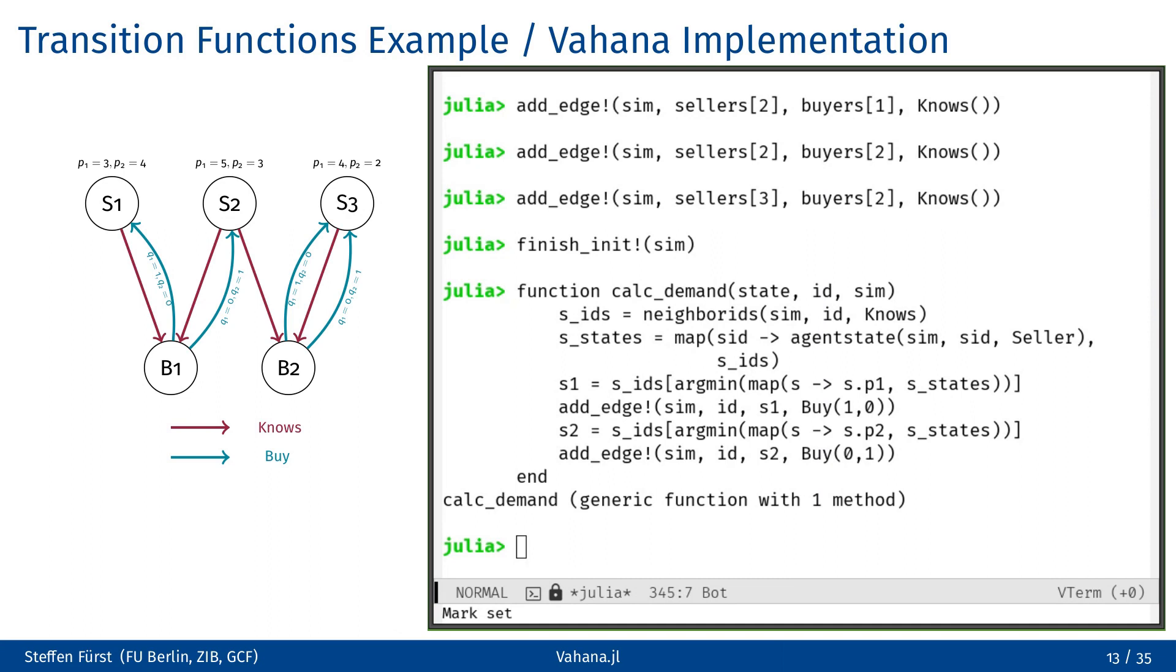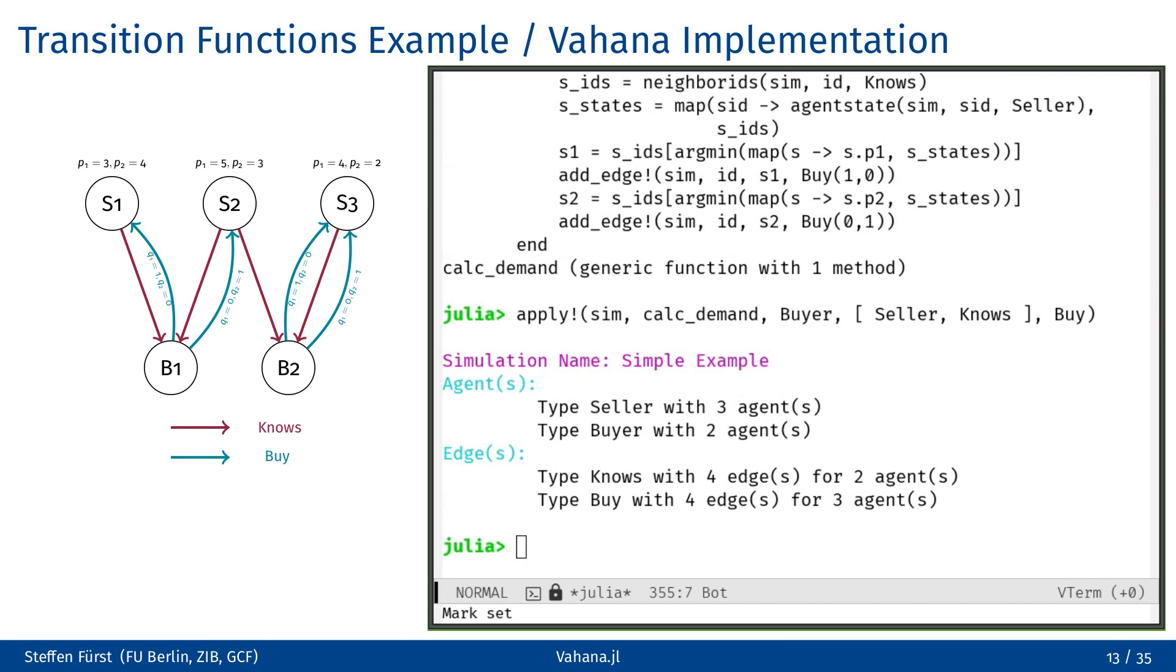Once we have defined our transition functions, the next step is to apply it to our simulation using the Vahana apply function. I hope the first two arguments are self-explanatory. The third argument specifies the types of agents that this function should be applied to. The fourth argument tells the simulation what types of data our transition function needs to access, as in Vahana information such as new edges or the current state of agents is not automatically transmitted between different processes. The last argument lets Vahana know what can potentially be changed by the function. For example, since buyer is not listed in the write argument, Vahana understands that the transition function doesn't return a new state for the agent. When a transition function attempts to read or write a state that isn't specified in the corresponding arguments, by default it will trigger an assertion. However, these checks can be disabled after the development phase to improve the performance.